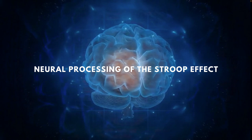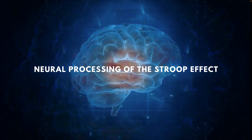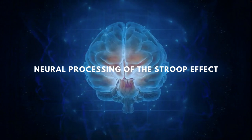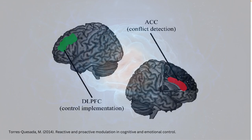Neuroimaging techniques including MRI, fMRI, and positron emission tomography (PET) scans have shown that there are two main areas in the brain specifically involved in processing Stroop task performance: the anterior cingulate cortex (ACC) and the dorsolateral prefrontal cortex (DLPFC).